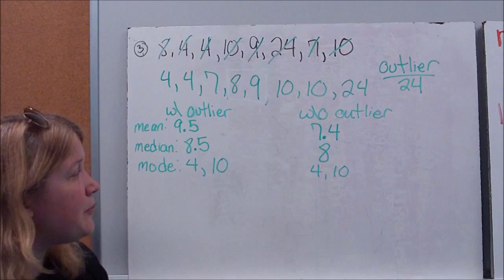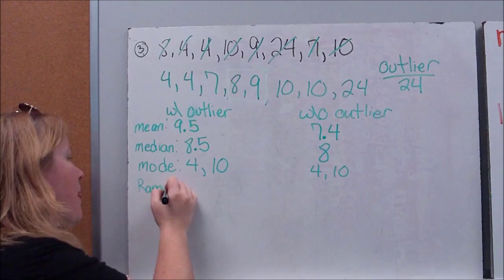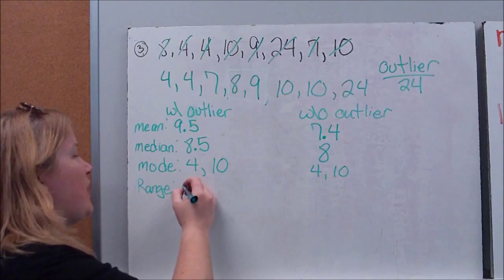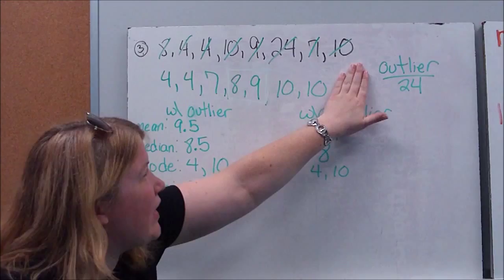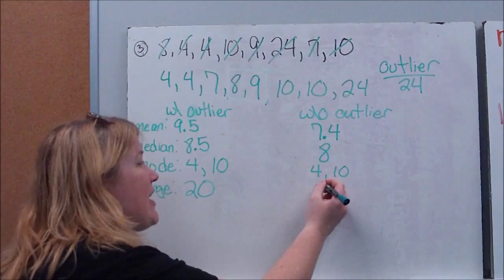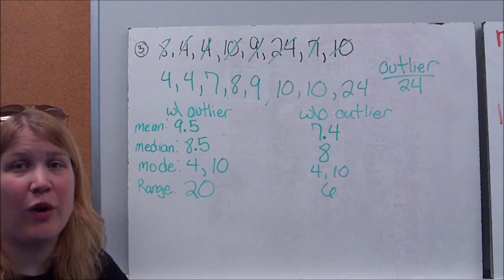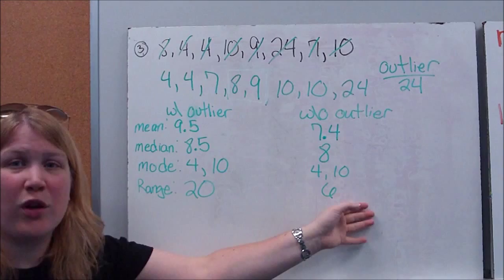Final thing we want to calculate is our range. Now with our outlier, I've got a 24 and a 4, which makes our range 20. It spans 20 different data points. If I ignore that, you'll notice my range is significantly reduced because now my biggest number is 10. 10 minus 4 only gives me a range of 6, which is a much smaller range to try and work with than 20. So here we're seeing the data is more clumped together, whereas without it, you see there's one that's really far away from the others.